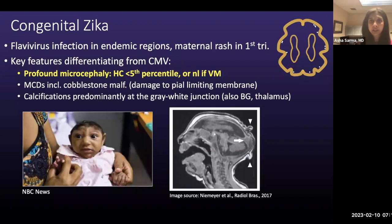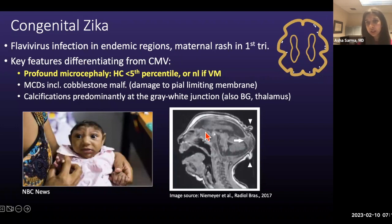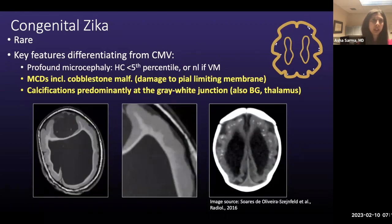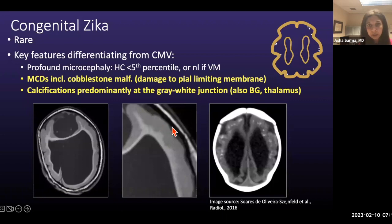Calcifications in Zika are predominantly at the gray-white junction — not periventricular — and can also be seen in the basal ganglia and thalamus. Here's a patient showing profound microcephaly with a markedly decreased craniofacial ratio, shelving of the occiput due to sutural overlap, and redundant skin folds. The cobblestone malformation has a fine, lumpy, bumpy, thick, almost lissencephalic appearance of the cortex — lissencephaly is actually a misnomer, but it simulates lissencephaly. You can see these calcifications at the gray-white junction.